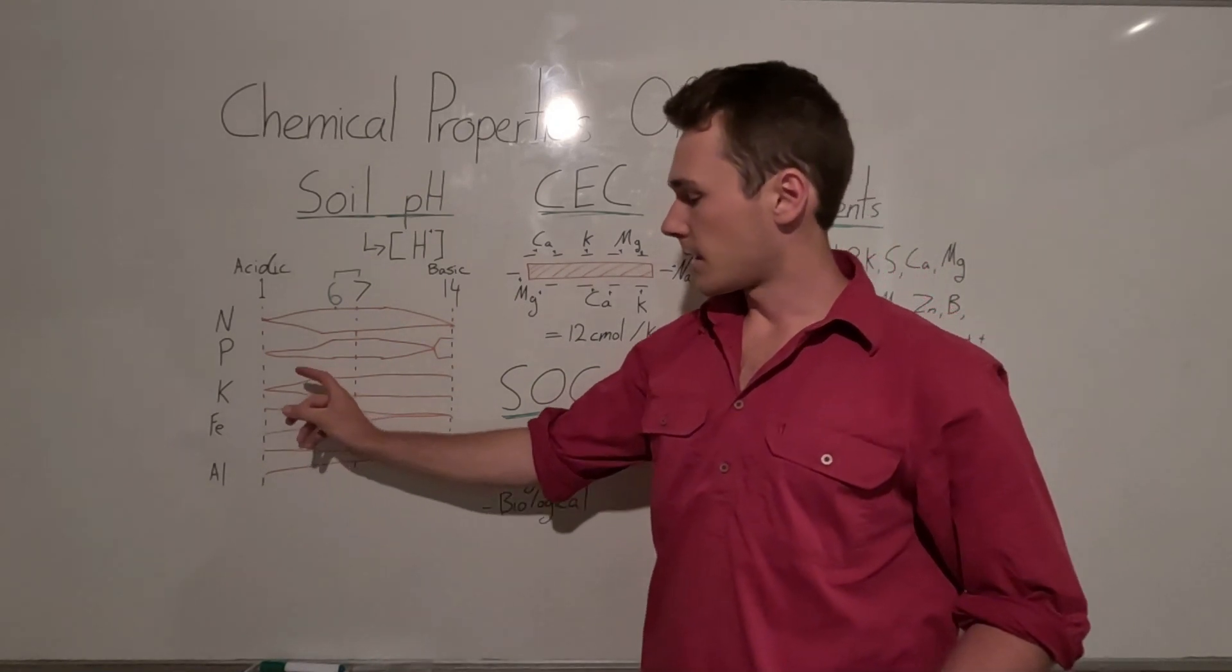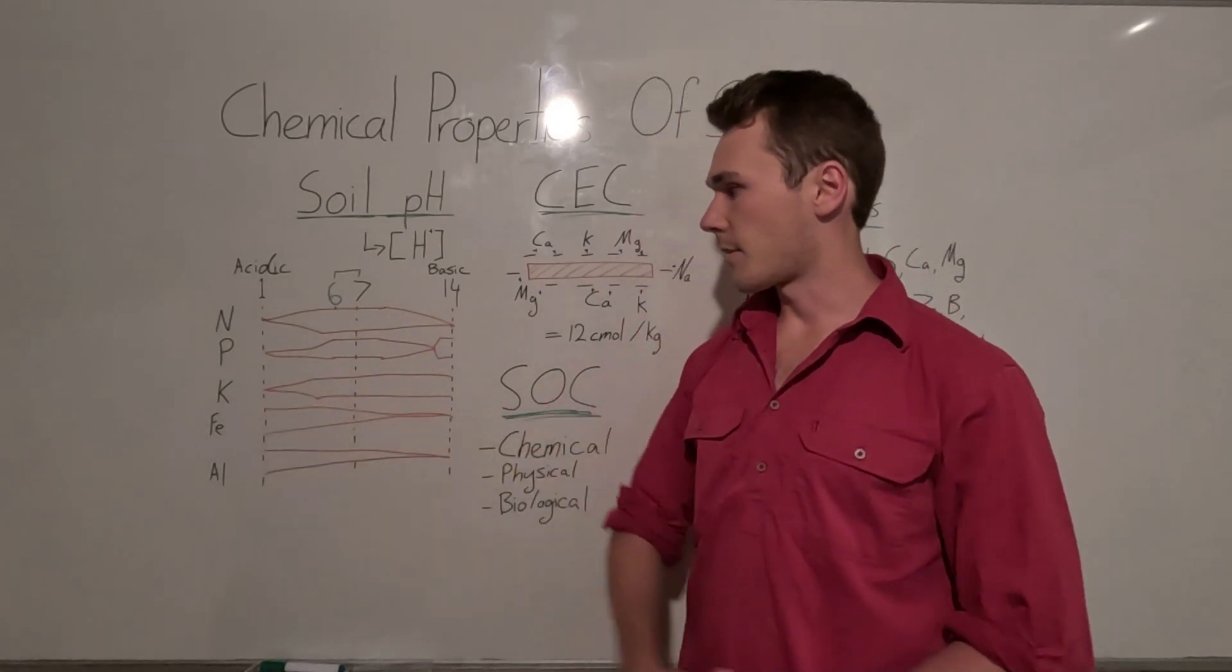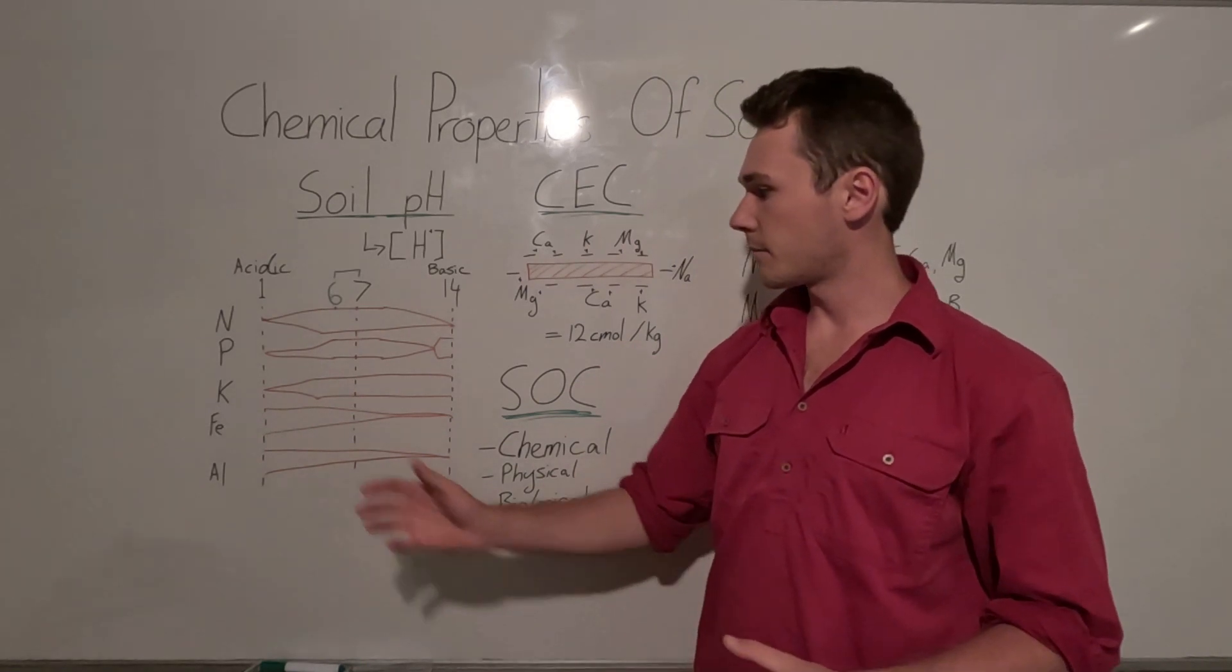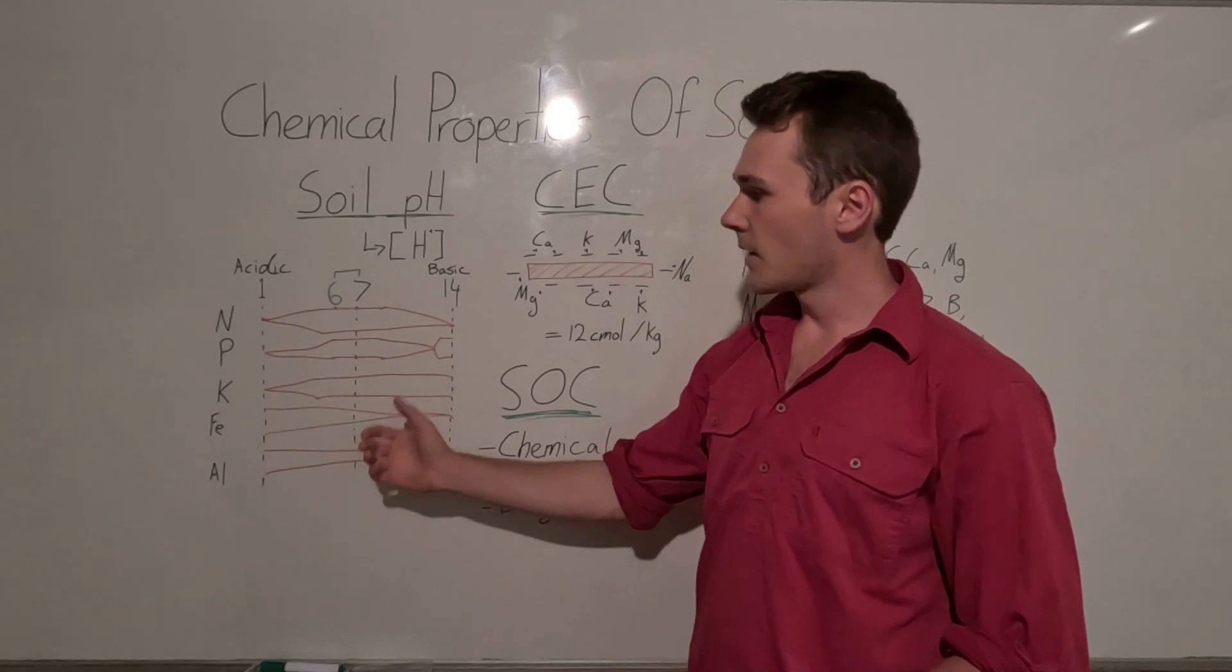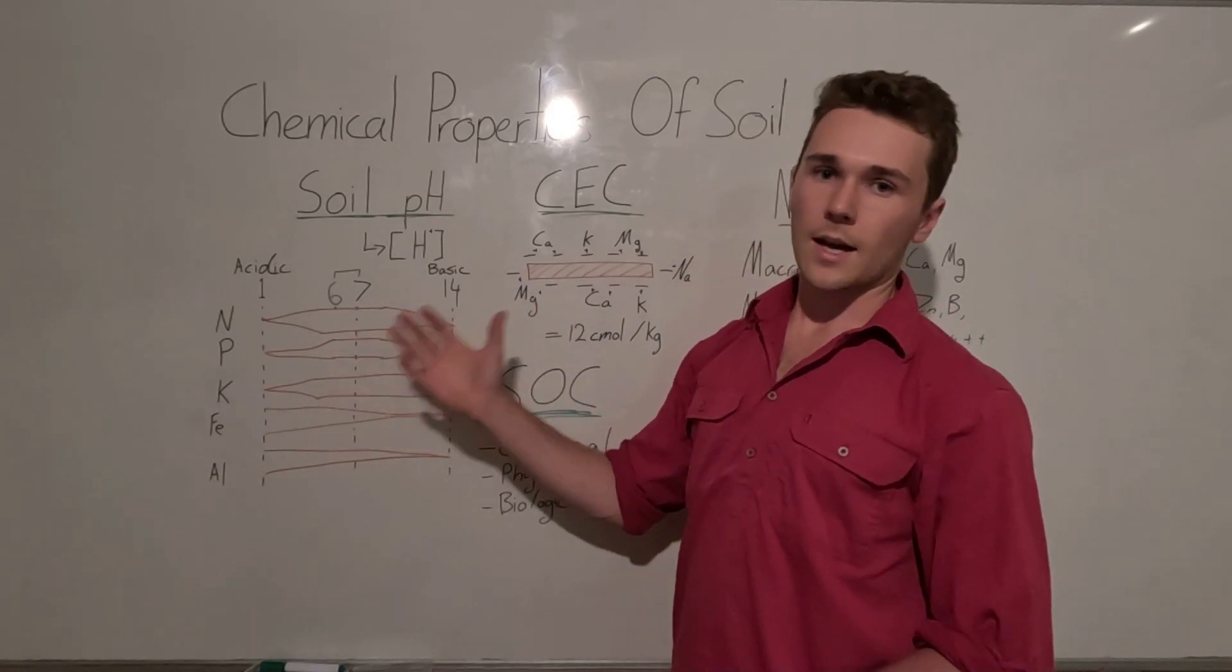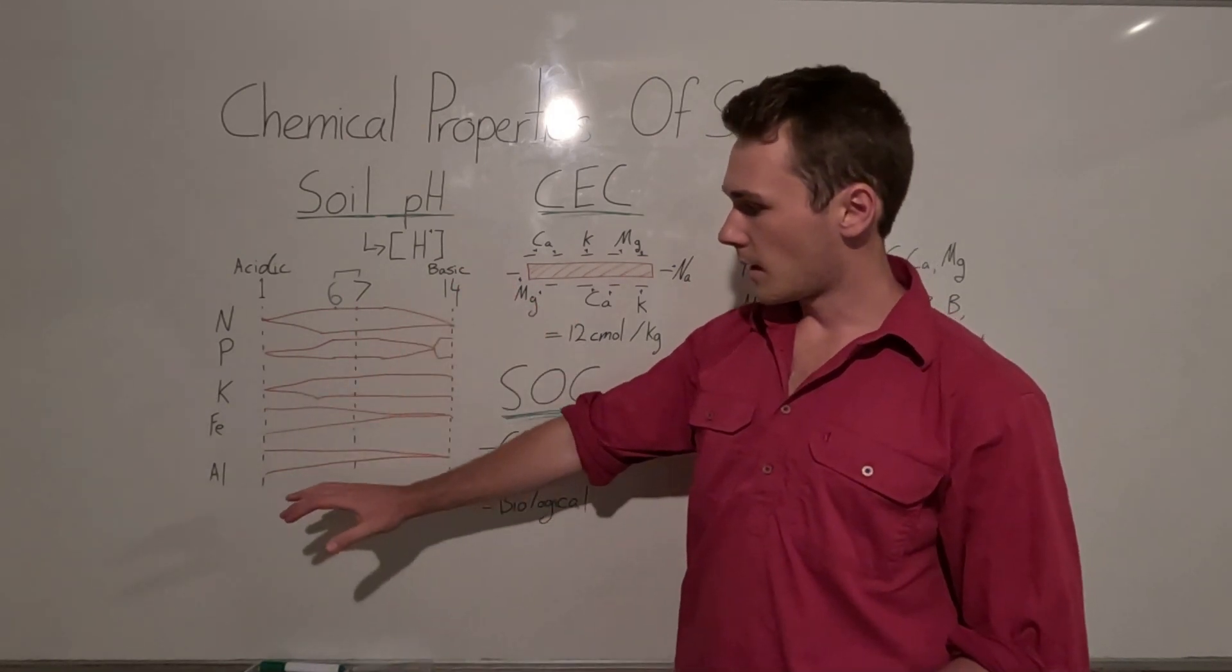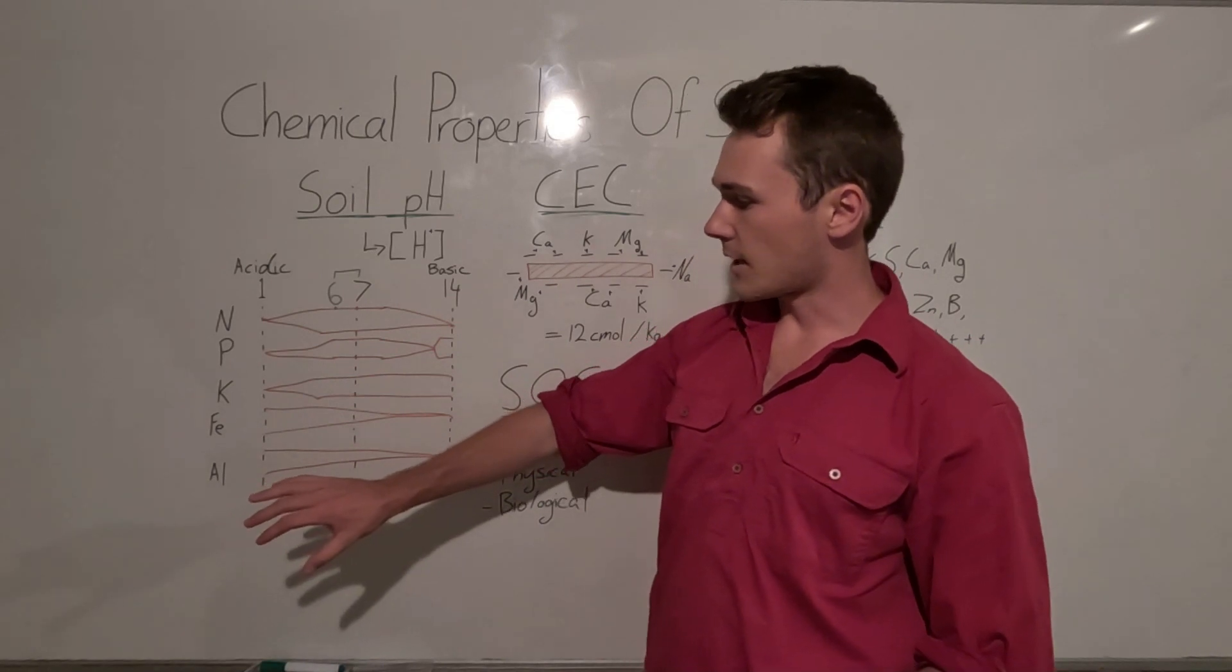Potassium is pretty low availability when the soil is acidic but increases as it increases in pH, and ions are the same.